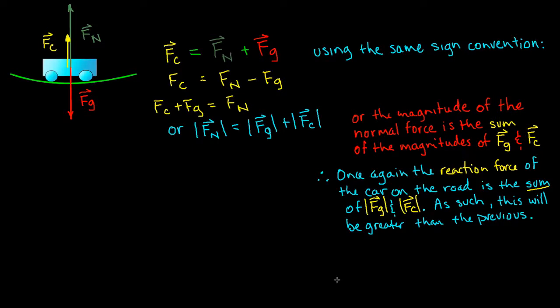Or in other words I'm saying that the magnitude of the normal force is now the sum of the magnitudes of Fg and Fc. In the previous example it was the difference. Now it's the sum. So once again the reaction force of the car on the road must also be the sum of Fg and Fc. And as a result this has to be greater than the previous example. In the previous example we were looking at the difference between Fg and Fc, not the sum.